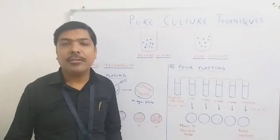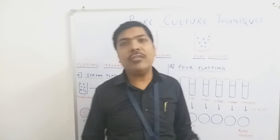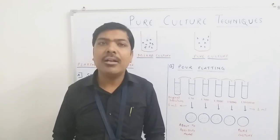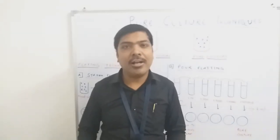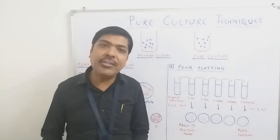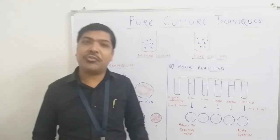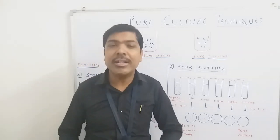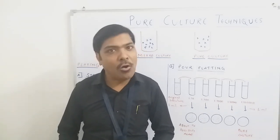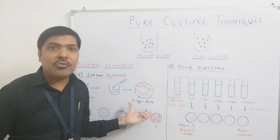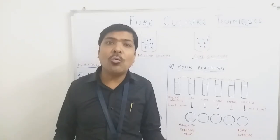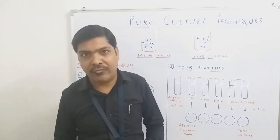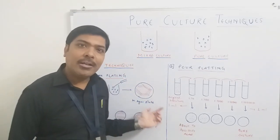The next step is preparation of the nutrient agar media. As discussed in the last class, nutrient agar is a complex media composed of beef extract, peptone, sodium chloride, and agar — where agar is the solidifying agent. We prepare the nutrient agar and sterilize it using an autoclave at 121 degrees centigrade. Once sterilized, the hot melted nutrient agar is poured into a petri dish and we wait 10 to 15 minutes until the agar solidifies, giving us a solidified nutrient agar plate.